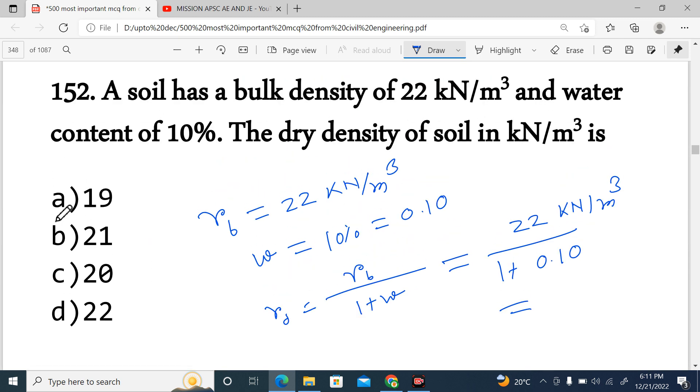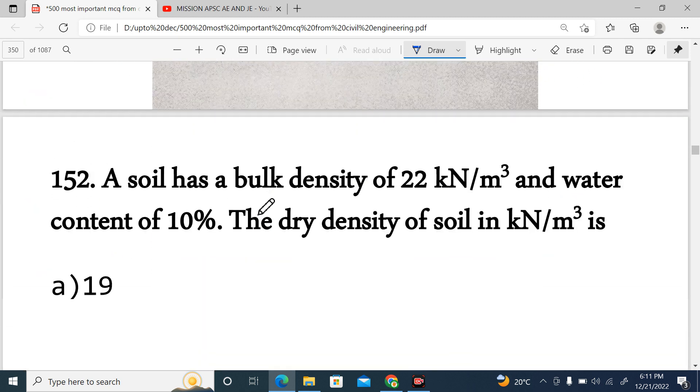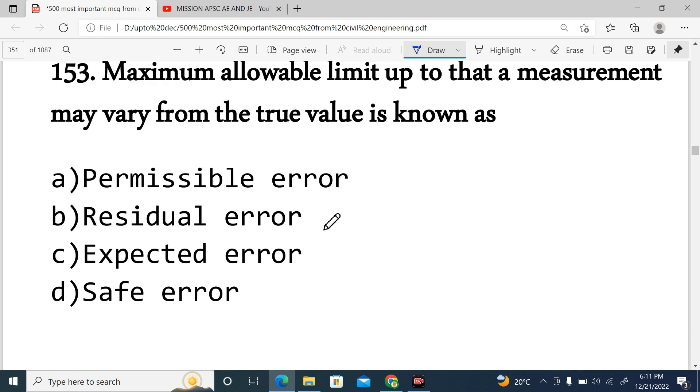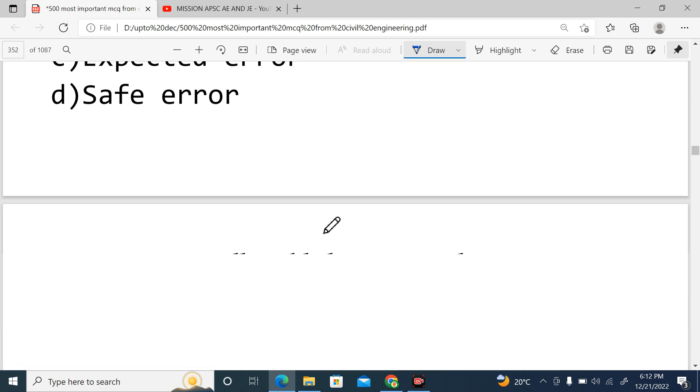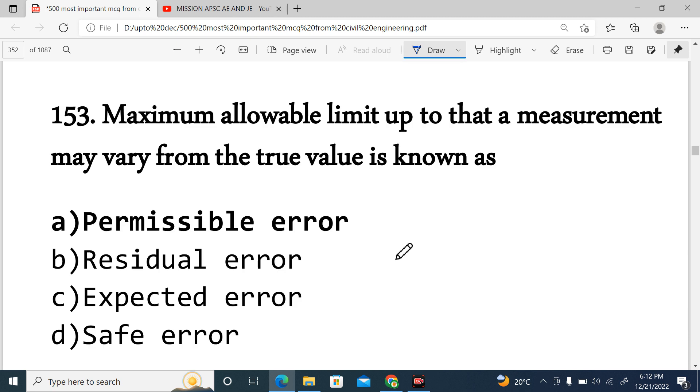Next question, Question Number 152: A soil has a bulk density of 22 kilonewton per meter cube, water content is given as 10 percent. Dry density gamma dry is asking. So one fundamental relationship: gamma dry is nothing but gamma bulk divided by 1 plus water content. Gamma bulk is 22 kilonewton per meter cube, water content is 0.10, and ultimately it will give around 20. The answer is option C.